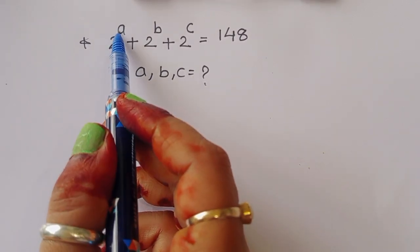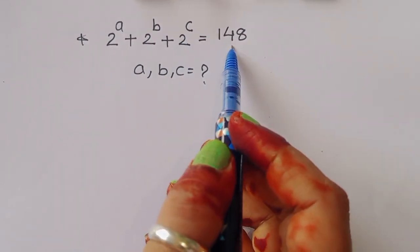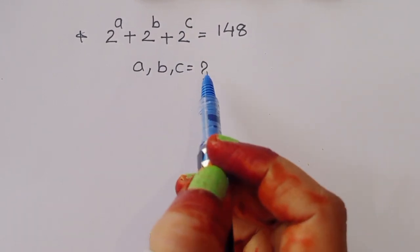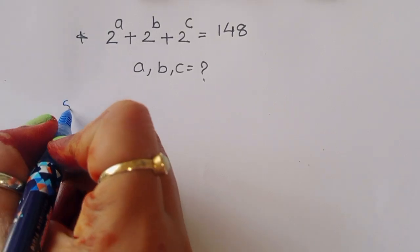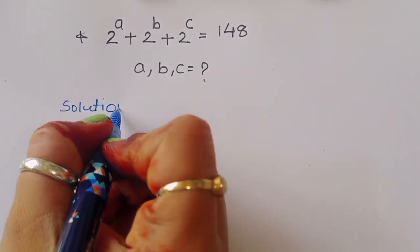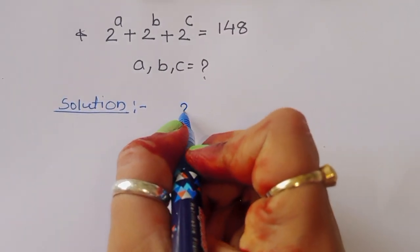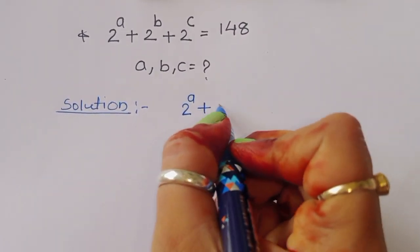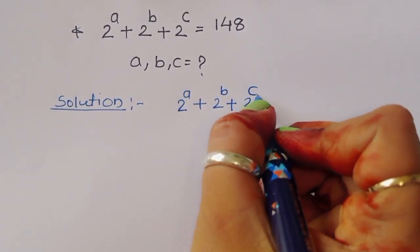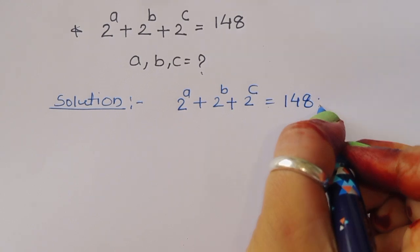The question is: 2 power a plus 2 power b plus 2 power c is equal to 148. We have to find out the value of a, b, and c.